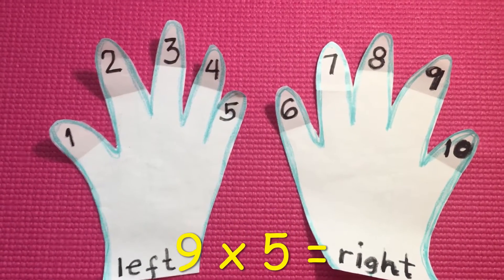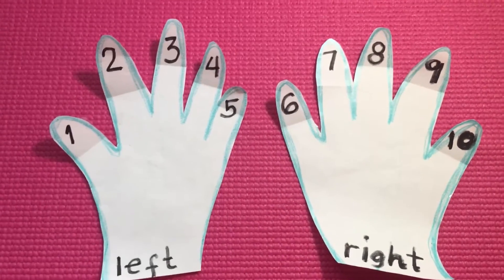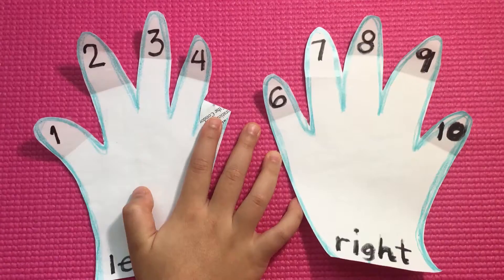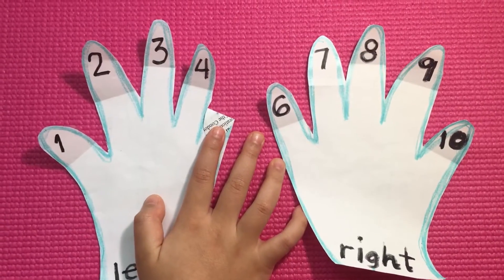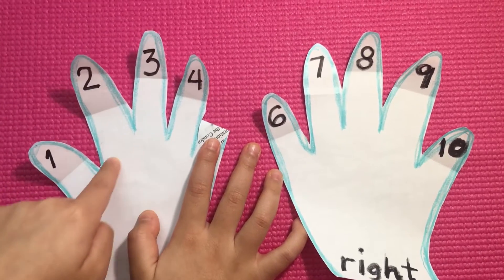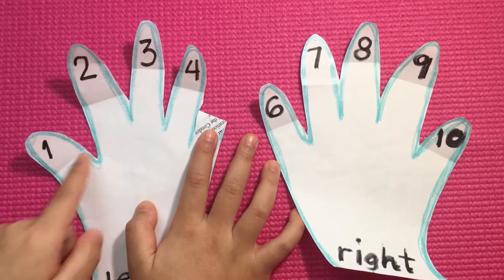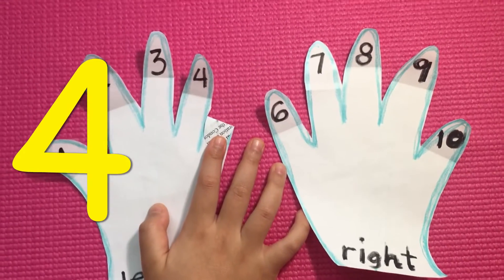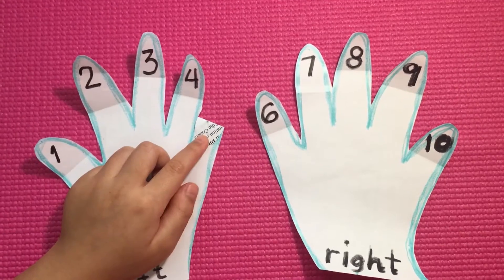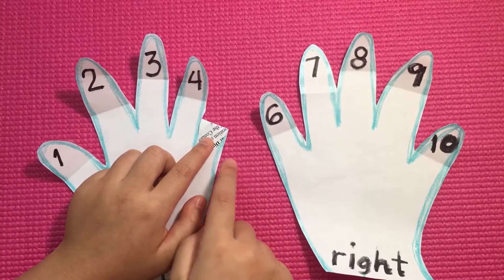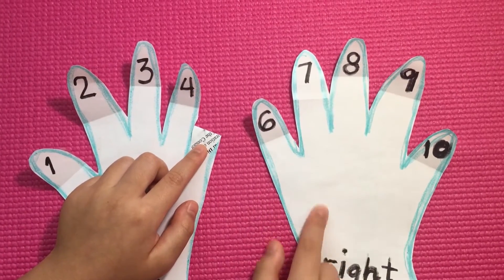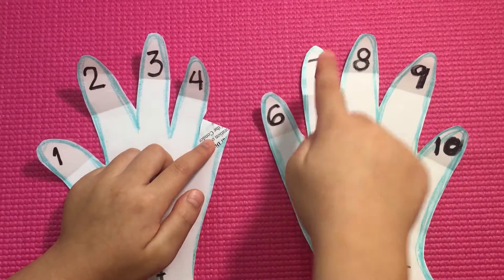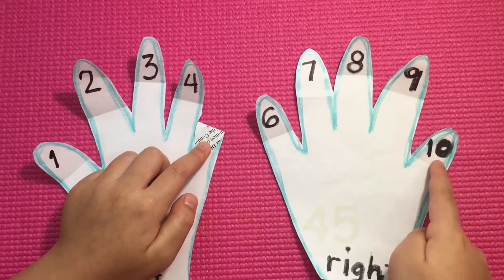Let's move on to 9 times 5. Let's fold number 5. How many fingers do you see on the left of the folded finger? Let's count: 1, 2, 3, 4. That means there are 4 tens. How many fingers do you see on the right? Let's count: 1, 2, 3, 4, 5.